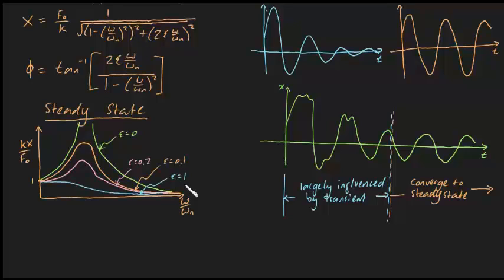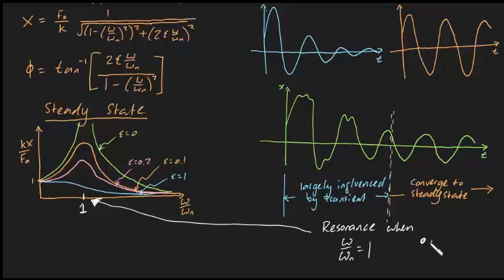Notice that for low values of damping, the non-dimensionalized amplitude skyrockets when the frequency ratio is exactly equal to 1. This is something called resonance, and it's typically something engineers want to avoid.